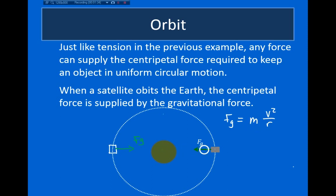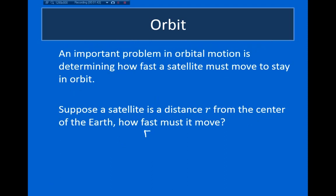Now, because the satellite is so far away from the center of the planet, we'll have to use the universal formula for gravitational force. So we have that the gravitational force equals mv²/r. The universal formula for gravity gives us G times the mass of the planet times the mass of the satellite, divided by the square of the distance — where this distance is between the center of the planet and the position of the satellite. And this has to equal mv²/r.